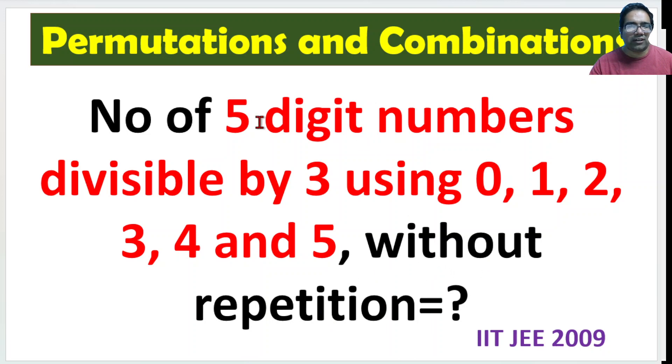So when we have to create 5 digit numbers, either they will include 0 or they will not include 0, these are the only two options. Either the 5 digit number will have some 0 or it will not have a 0. Let us look at the cases where it will not have a 0 first.